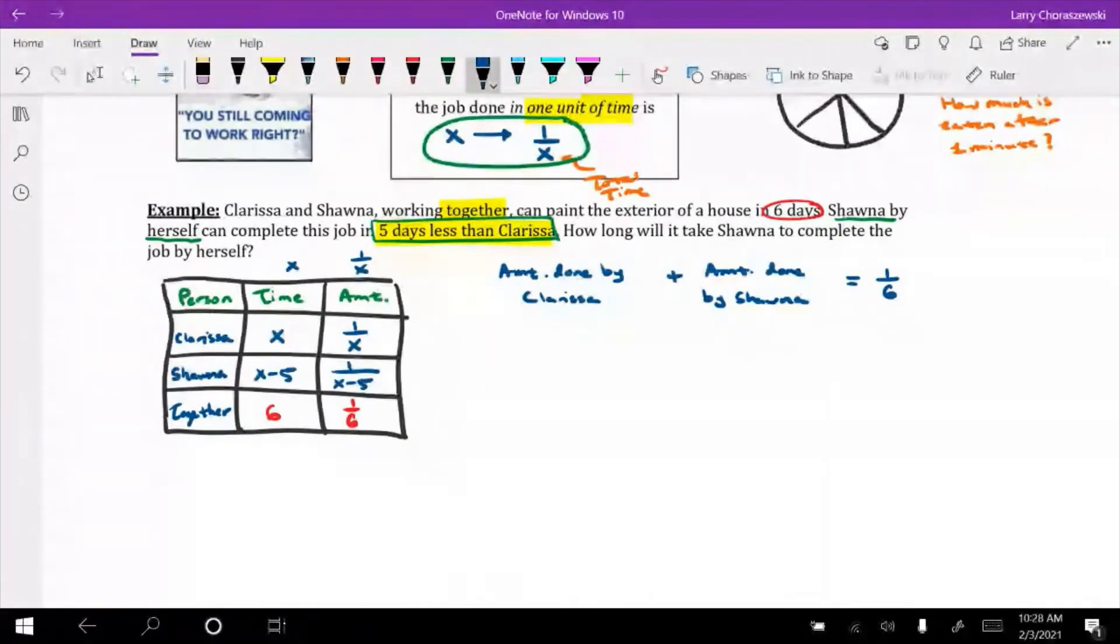So that actually allows us to get an equation involving the expressions in the last column, namely one over x because that's the part of the job done by Clarissa after one unit of time. And then Shawna's contribution to this one-sixth is one over x minus five. So long story short, once you have your last column filled out, what you do is you take the fractions for the individuals, you add them together, and you set it equal to whatever this expression is. So it's basically we're assuming that the one-sixth is split up into one over x and one over x minus five. And in making that connection, we end up with a rational equation.